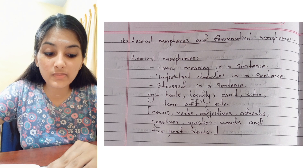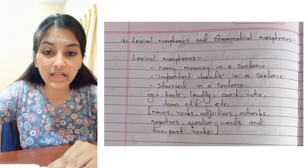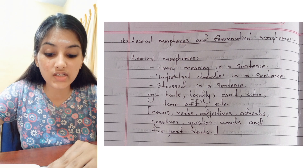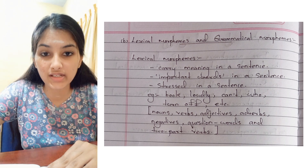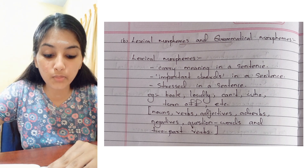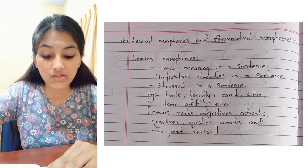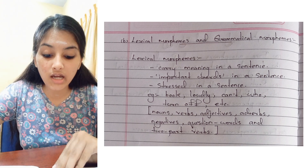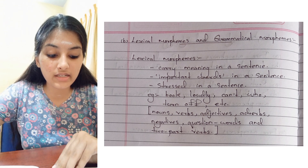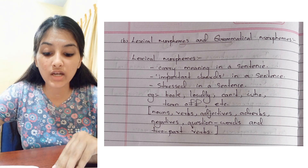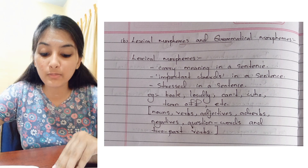Lexical morphemes and grammatical morphemes. Both lexical morphemes and grammatical morphemes are free morphemes. Lexical morphemes are those which carry meaning in a sentence. They are important words in a sentence and they are usually stressed. For example: book, loudly, can't, who, turn off, etc. That means nouns, verbs, adjectives, adverbs, negatives, question words, etc. are all lexical morphemes.